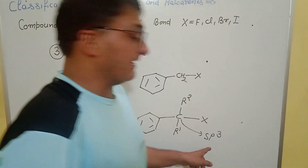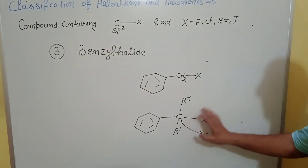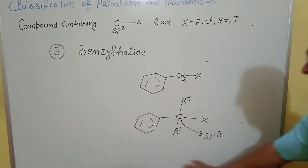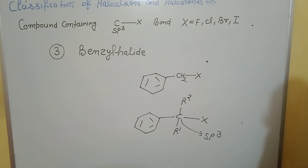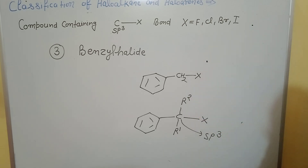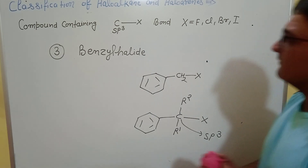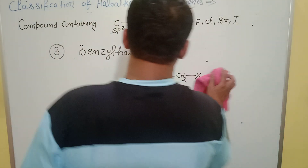The carbon bearing the halogen is sp3 hybridized, and this compound is benzyl halide — the benzylic form of a halide. The third classification is based on the CX bond where carbon is sp2 hybridized.